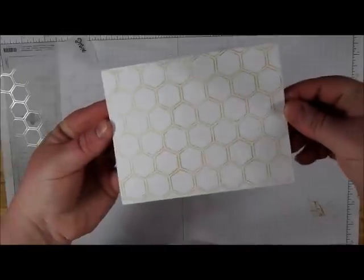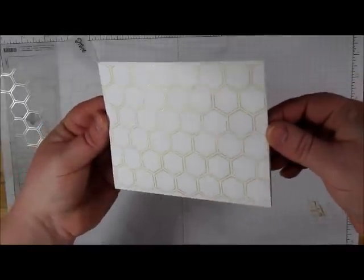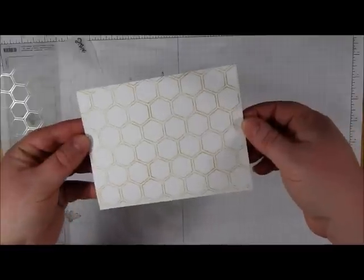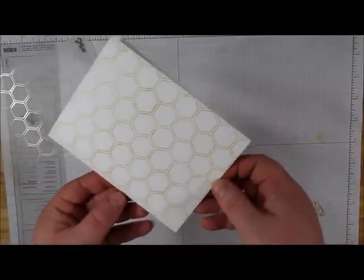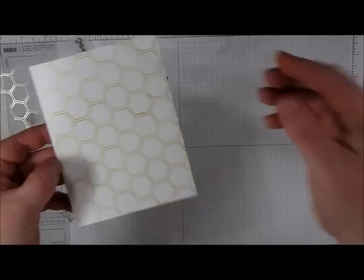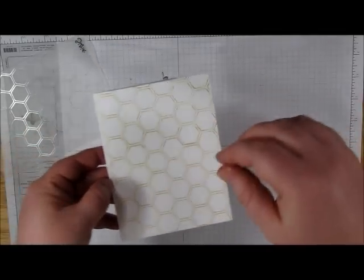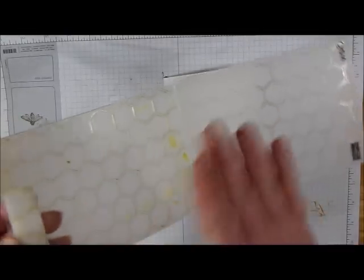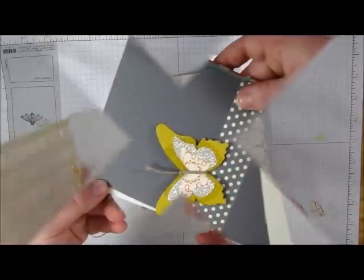Now using the shimmer paint will give you a metallic look, very similar to heat embossing. However, if you just want to use it as a stamp, you can use your stamp pad direct to the embossing folder and just ink it up that way and stamp with it.